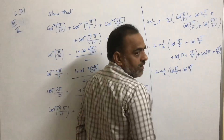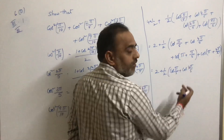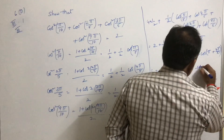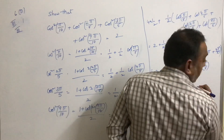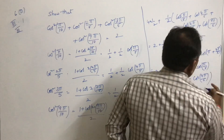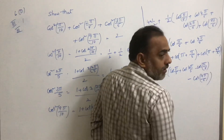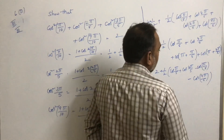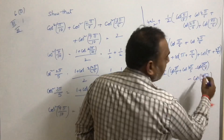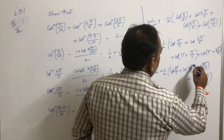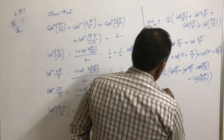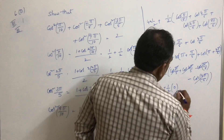Now, recall that cos(π + θ) = −cosθ. So cos(π + π/5) = −cos(π/5), and cos(π + 4π/5) = −cos(4π/5). Therefore the bracket becomes: cos(π/5) + cos(4π/5) − cos(π/5) − cos(4π/5) = 0. So we have 2 + (1/2)(0) = 2.